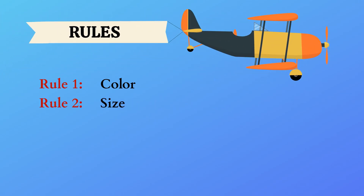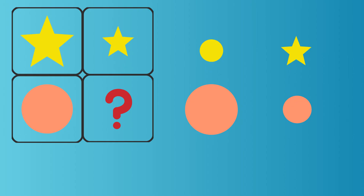Rule 2: Size. The first figure is a yellow star, and the second figure is also a yellow star but smaller than the first. Both figures have the same color and shape, but the size is different. In the bottom figure, we have an orange circle. Applying the same rule, the shape and color should be the same — an orange circle — and the size should be small. So the answer is small orange circle.